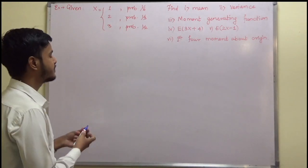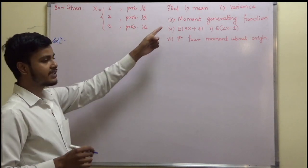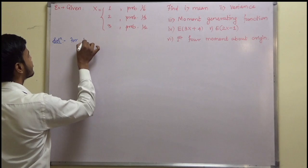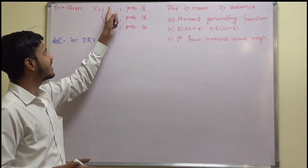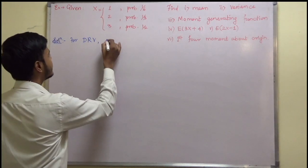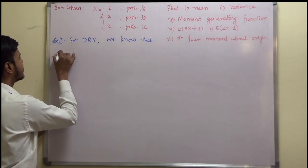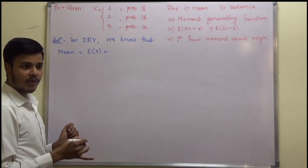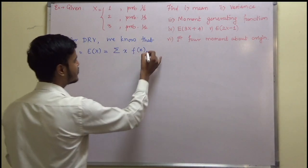So let us first find out the expectation of X. First we have to find out the mean, meaning thereby the expectation. Why am I writing discrete random variable? Just looking at the values of X — X is taking values 1, 2, 3 — I came to know that this is a problem of discrete random variable. So for a discrete random variable, we know that mean, denoted by expectation, is equal to summation x·f(x).